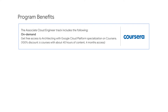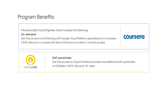This track includes access to the Architecting with Google Cloud Platform specialization on Coursera. This on-demand training includes six in-depth courses with videos, hands-on labs, and quizzes. Hands-on experience is crucial for success with the Associate Cloud Engineer certification exam. You'll receive credits to complete self-paced labs on the QuickLabs platform free of charge. This training puts you on the path to success for achieving the Associate Cloud Engineer certification.